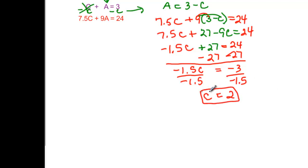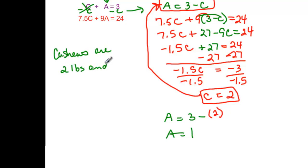So we now know that cashews cost $2. But we still don't know what our almonds cost, but remember we have this nice equation up here, where A is equal to 3 minus C. And we can plug and chug again. So we have A equal to 3 minus, but now we know C to be 2. So that tells us that A is equal to 1. So putting it in a sentence then, cashews are 2 pounds, and almonds are 1 pound to make the 3 pound mixture.